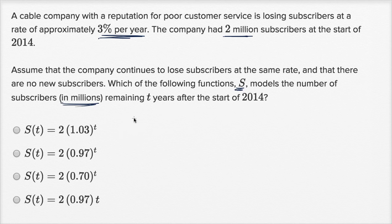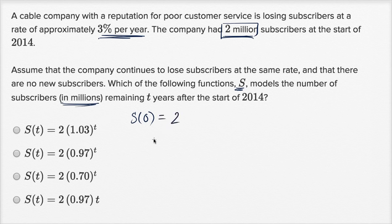So let's just think about this a little bit. S of zero, when T equals zero, this is zero years after the start of 2014, so this would be the number of subscribers they had at the start of 2014, which is two million. So S of zero is going to be two. S is in terms of millions, they tell us that. So S of zero is two.